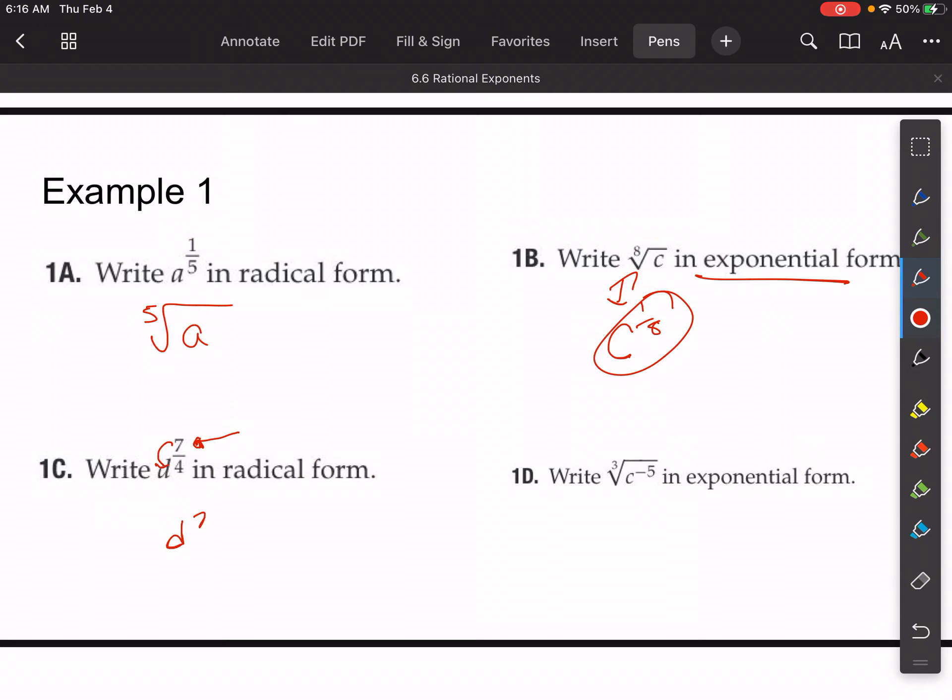So we have d to the 7th, but then we're taking the fourth root of that. So that's how you would write this type of number here.